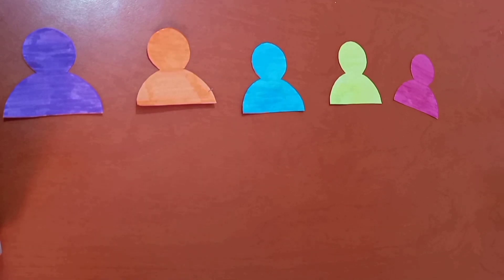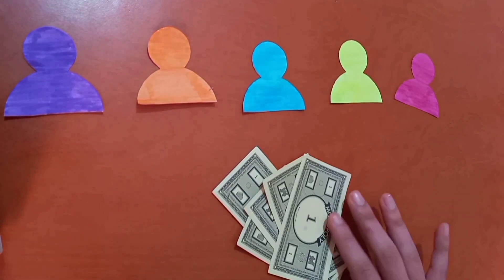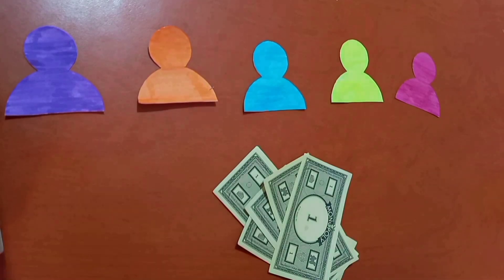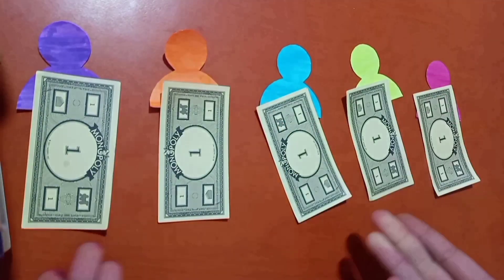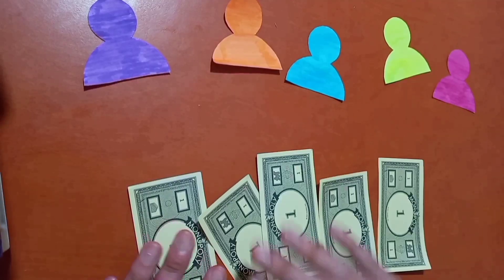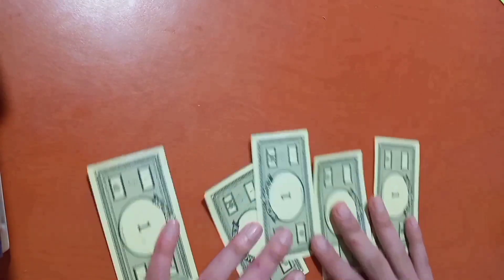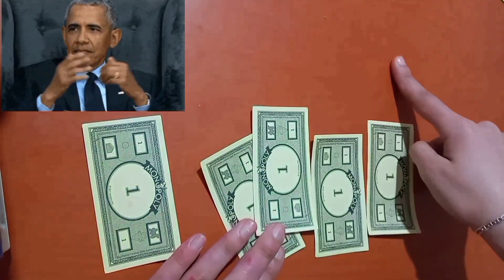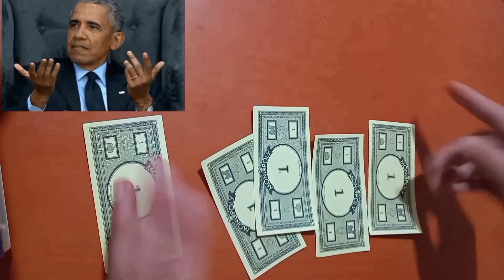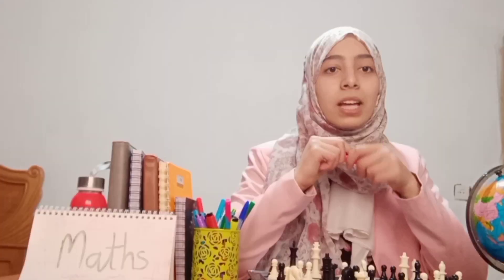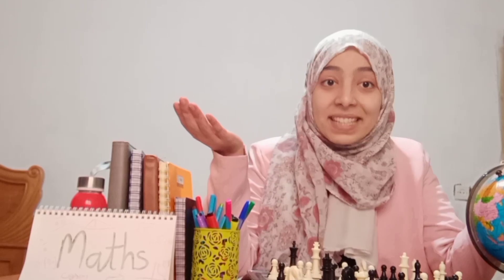Imagine that you have five dollars and try to distribute them among five friends. Each friend will have one dollar. Now try to distribute the five dollars evenly among zero friends. How much does each friend get? As you see, it doesn't make sense — you said that you have no friends.